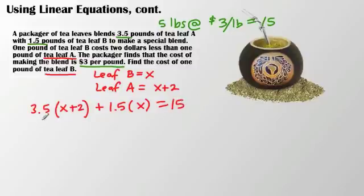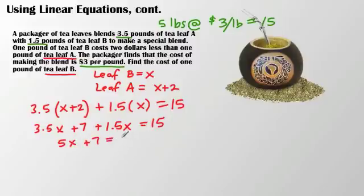Alright, using the distributive property here, yields us 3.5x plus 7, plus 1.5x equals 15. I combine my like terms, 3.5 and 1.5x. So, I now have 5x plus 7 equals 15. Subtract 7 from both sides, working to isolate the variable. 5x equals 8. Divide by 5. 5x equals 8 fifths.